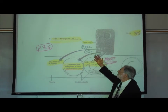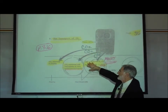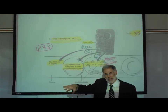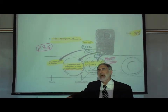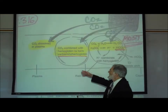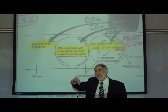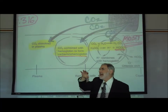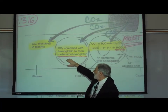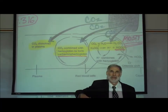A medium amount of carbon dioxide enters the red blood cells and attaches to the hemoglobin. When carbon dioxide combines with hemoglobin, that combination is known as carbaminohemoglobin.